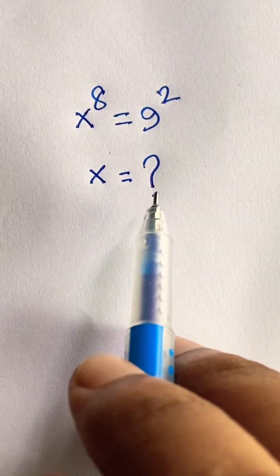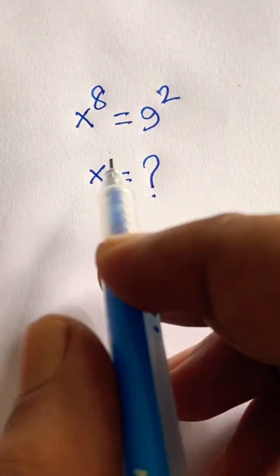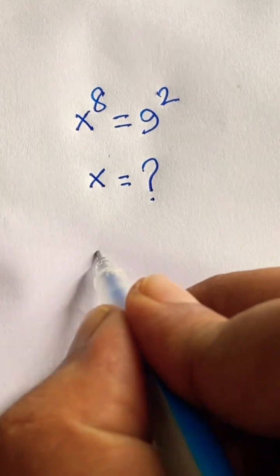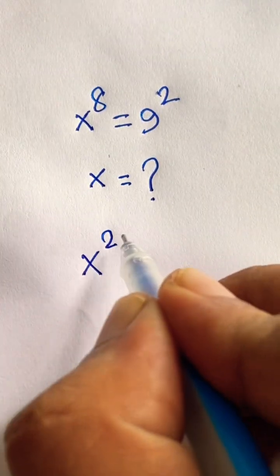x to the power 8 is equal to 9 to the power 2. x equals what? How to solve this question? In this case, x to the power 8 can be written as 2 times 4.